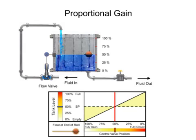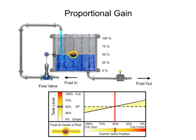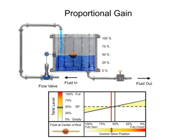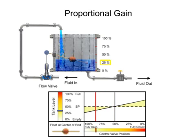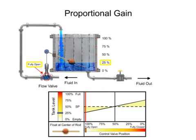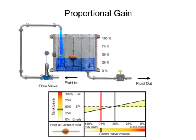Positioning the float to the midpoint of the bar increases the gain. The valve fully opens when the level drops to 25% and fully closes when the level rises to 75%.